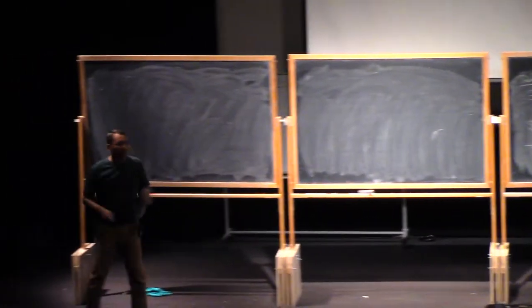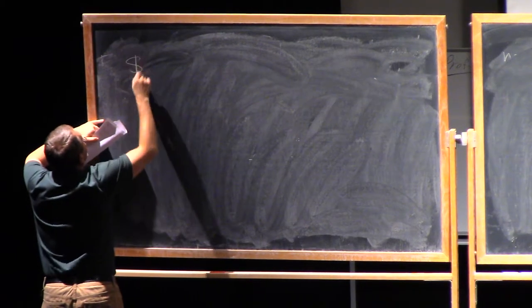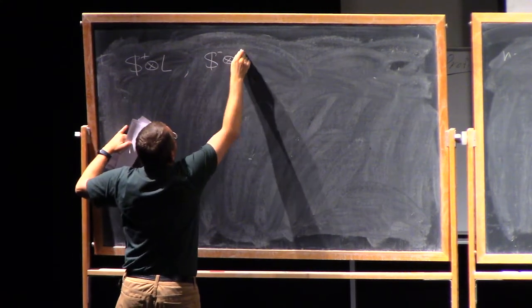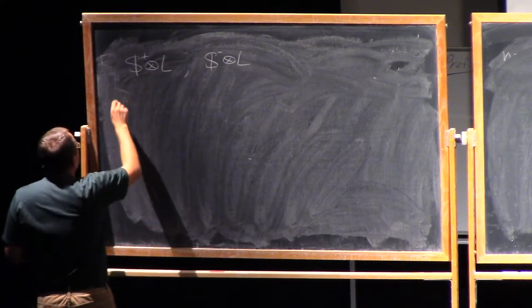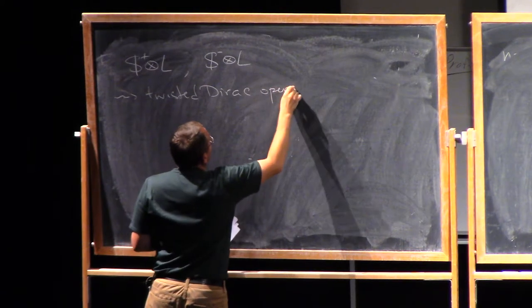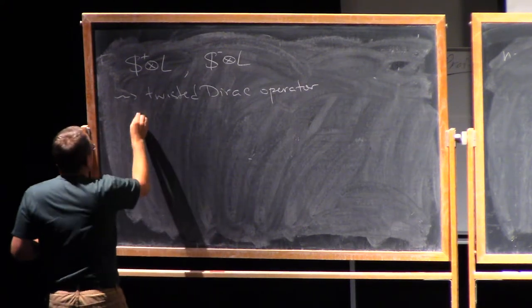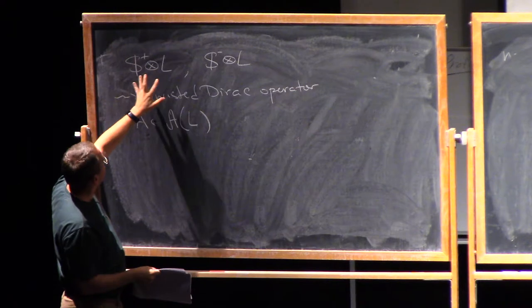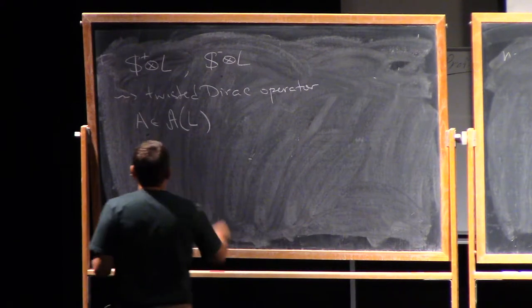Okay, let me discuss quickly one variant of this. So if you have a spin structure, what you can do, you can twist S plus by a Hermitian line bundle, and also S minus by a Hermitian line bundle. And this gives you the twisted Dirac operator, which is defined just by the same formula, meaning that if you have a connection A on L, a Hermitian connection on L, this gives you a connection together with the Levi-Civita connection on these bundles. And again, you have a Dirac bundle, and you can apply the same rule.